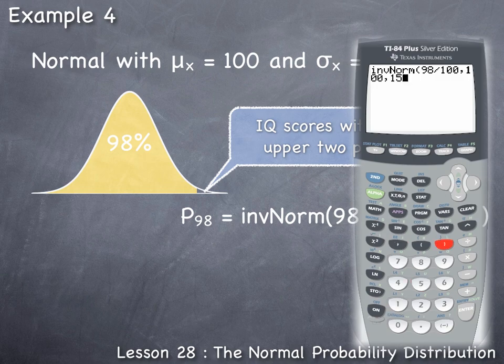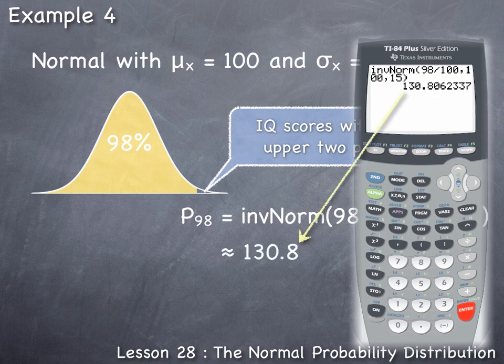This gives us the corresponding value. The inverse norm command produces values in the same units as the random variable—in this case, IQ scores. The value we get, which rounds to about 130.8, is in IQ points.